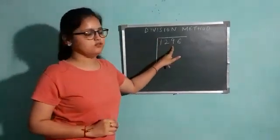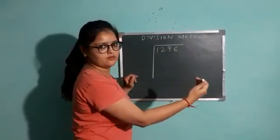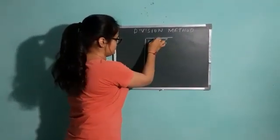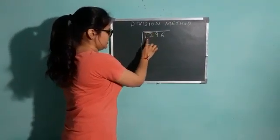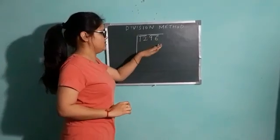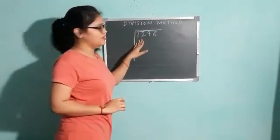First step I told you to make pairs. Pairing is always done from right to left. First pair has 96 and second pair has 12. From the right side, the first pair is 96 and the second pair is 12.